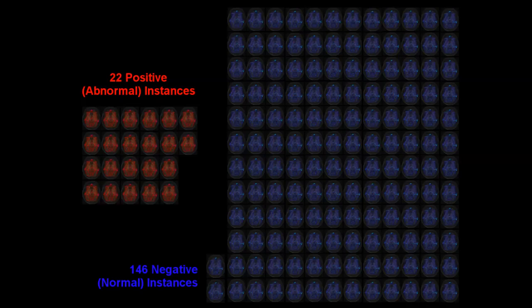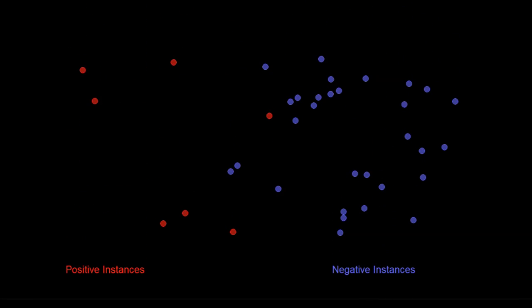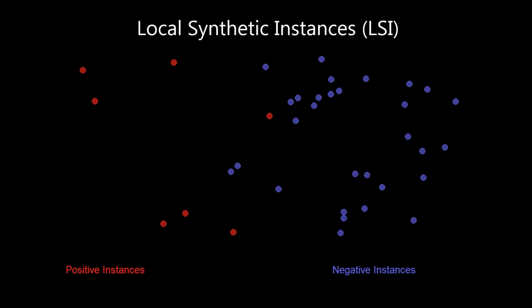In order to deal with this extreme class imbalance, we introduce a novel method of augmenting our training dataset with realistic synthetic instances. Our proposed local synthetic instance approach, or LSI, is designed to tackle the specific case of high-dimensional data and small sample size present in our training set of abnormal instances. LSI works by interpolating between instances of the same class using an interpolant that forces the new instances to remain close to at least one known instance.